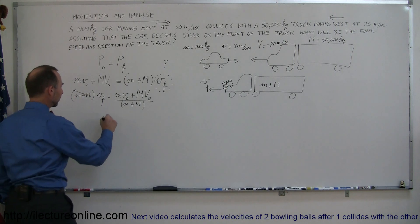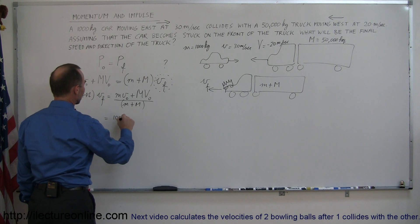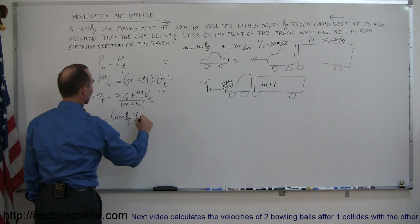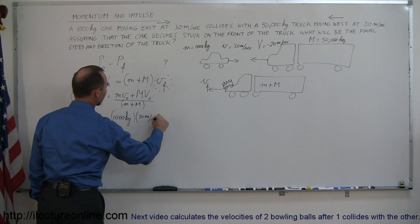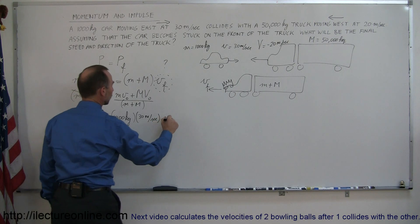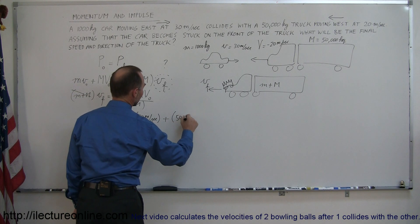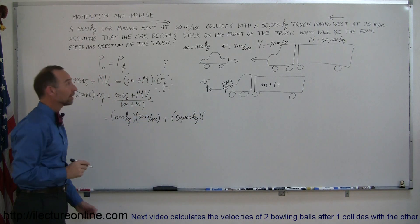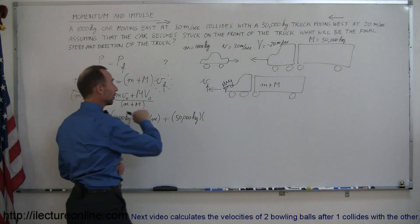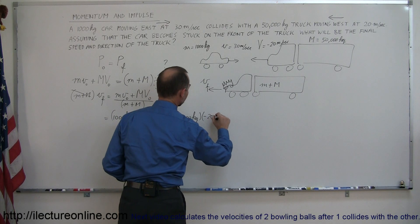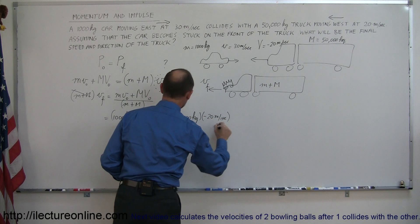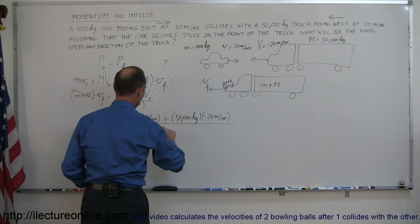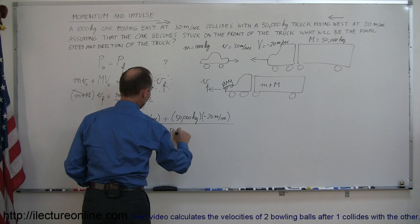Plugging in the values: (1,000 kg × +30 m/s) + (50,000 kg × −20 m/s), all divided by (1,000 kg + 50,000 kg). The car's velocity is positive 30 m/s because it moves right, and the truck's velocity is negative 20 m/s because it moves left.